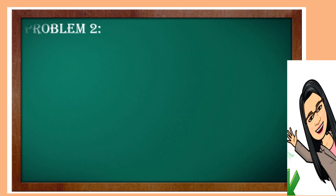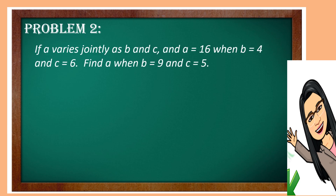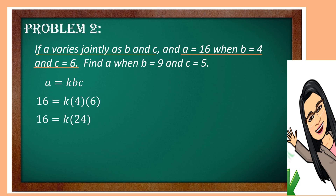Now let us solve problem number 2. If A varies jointly as B and C, and A equals 16 when B equals 4 and C equals 6. Find A when B equals 9 and C equals 5. To find the value of K: 16 is equal to K times 4 times 6. Then multiply 4 and 6, we will get 24.